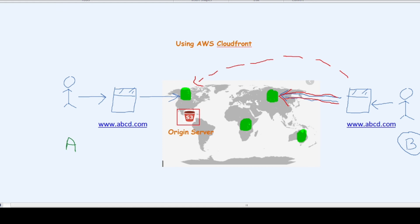For a normal personal blog or day-to-day website, this scenario might not be a major bottleneck. But when you think of a business use case — like an e-commerce website — user experience is very important, and that's why AWS CloudFront is used. I hope you are able to understand how AWS CloudFront works, what its architecture is, and how it helps solve business scenarios. Thank you.